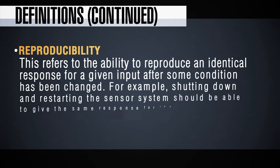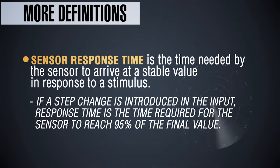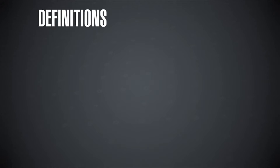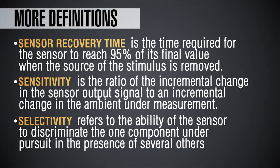Reproducibility refers to the ability of the sensor to provide an identical response for the same input even after some condition has been changed — for example, you turn the sensor off and then turn it back on. The sensor response time refers to the time it takes for the sensor to give you an output signal in response to a change in the stimulus. It is generally measured as the time required for the sensor to reach 95% of its final value. The sensor recovery time is essentially the reverse — the time it takes for the sensor to return to 95% of its final value after the stimulus is removed.